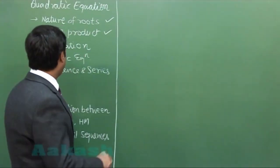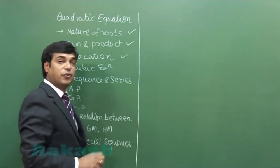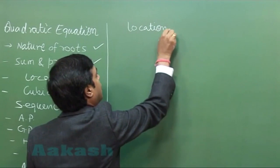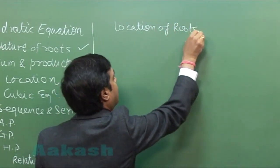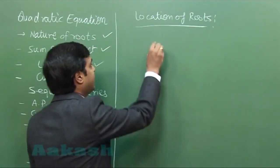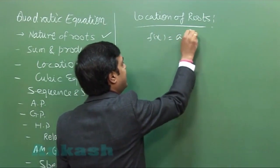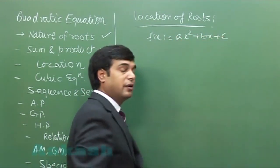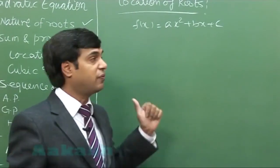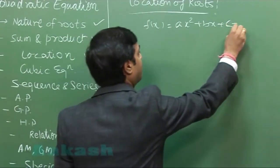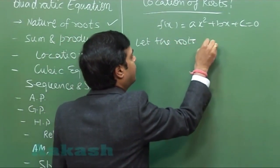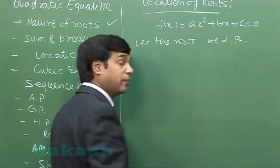Let's talk about location of roots. Consider the quadratic equation f(x) = ax² + bx + c. If we set ax² + bx + c = 0 and talk about the roots of this equation, let the roots be α and β.